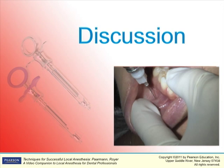Cross or overlapping innervation of nerves at the midline may cause incomplete anesthesia in this area. A supplemental infiltration of the central incisor may be required if this occurs.